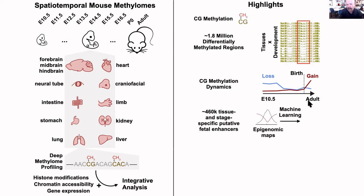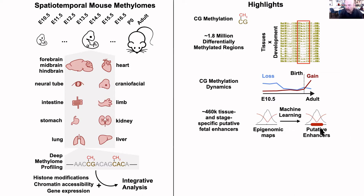We predicted these enhancers by combining the DNA methylation data with the other modalities — histone modifications, open chromatin, and changes in gene expression — using an algorithm that Yupeng developed and published in an earlier paper in PNAS, a program called Reptile, to predict putative enhancers. This performed well in the validation experiments carried out by Len and Axel.